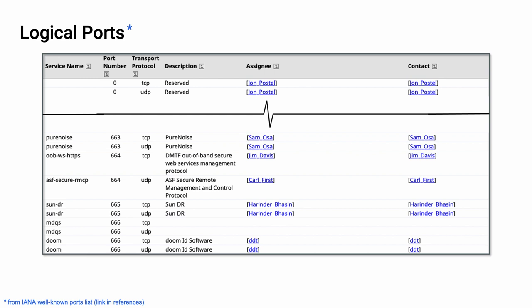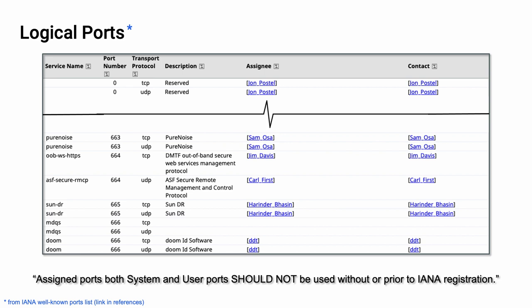It's very important to not complicate matters by randomly utilizing ports that are not registered. To quote the IANA: assigned ports, both system and user ports, should not be used without or prior to IANA registration. Additionally, when an organization needs more than one port, port multiplexing should be applied. The discussion of diversity of different types of information for a given registered port is outside the scope of this video.